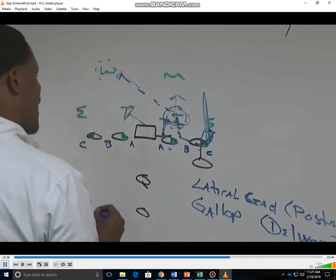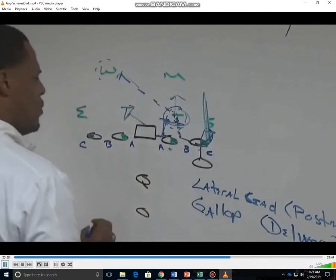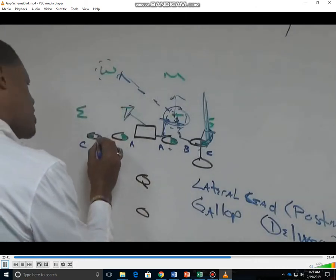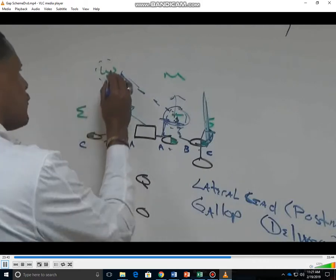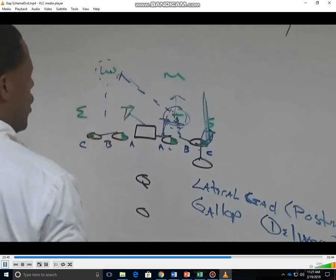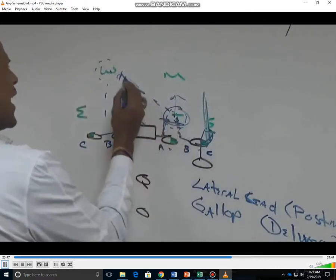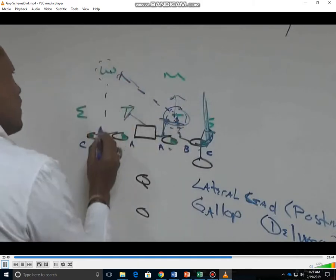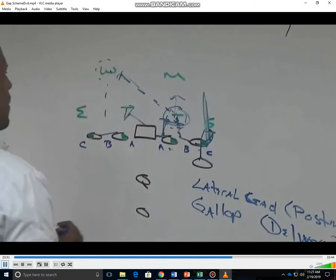Let's talk about our backside tackle before we get to our skip-pulling guard. He's responsible to protect the B gap first for any run through on the backside, because the frontside double team can't see the backside. Run through on the backside B gap.